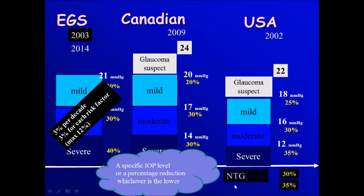In case of normal tension glaucoma, the Americans will go for a 30 to 35 percent reduction.